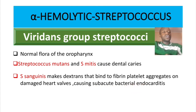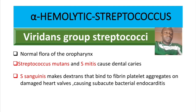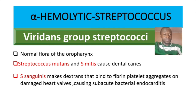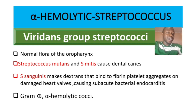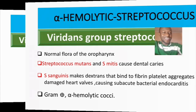Usually the valve that gets affected is the mitral valve, because in the general population it is the one most commonly damaged. These are gram-positive alpha-hemolytic cocci.